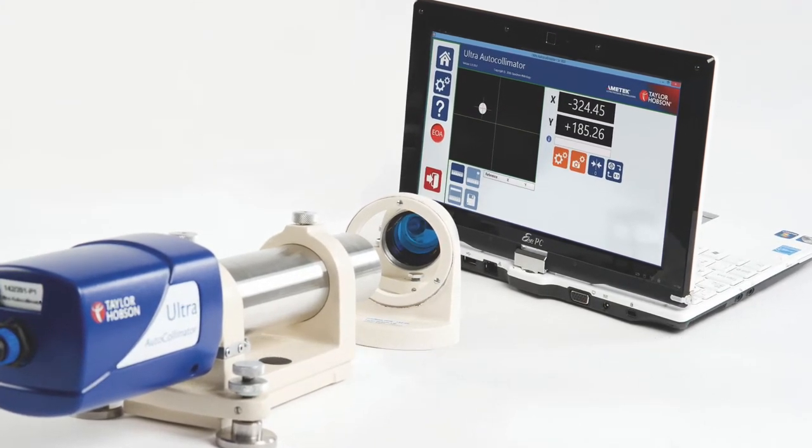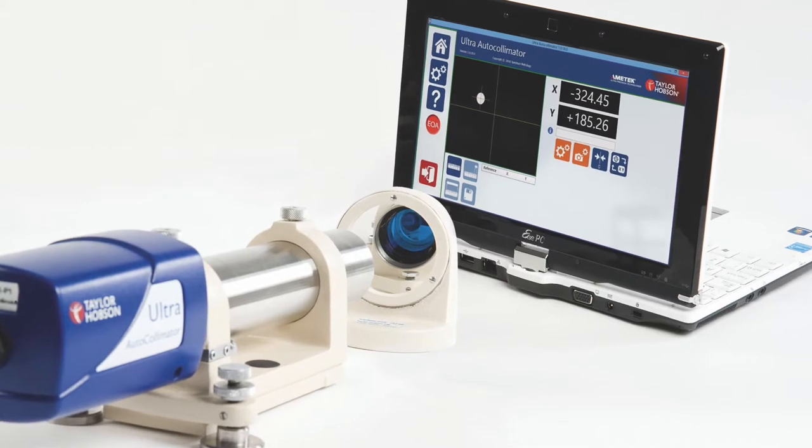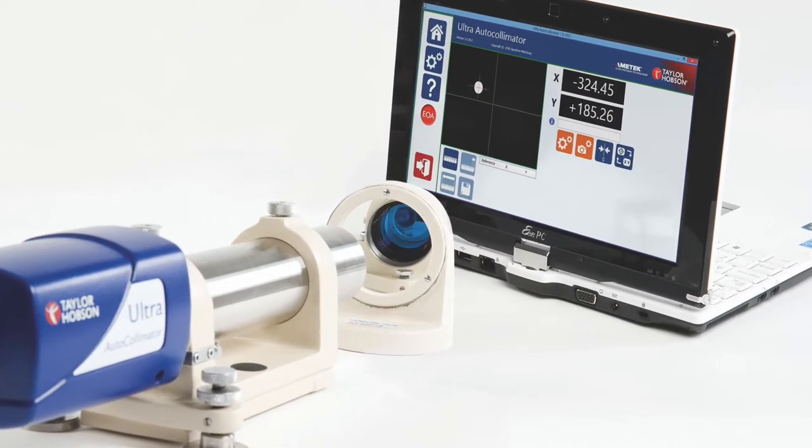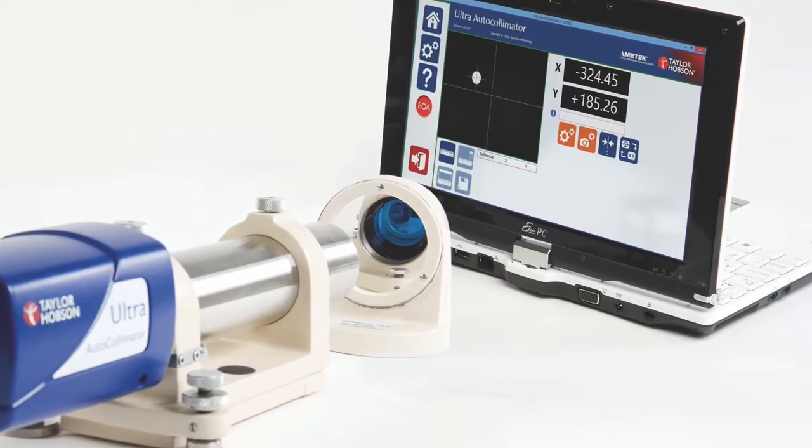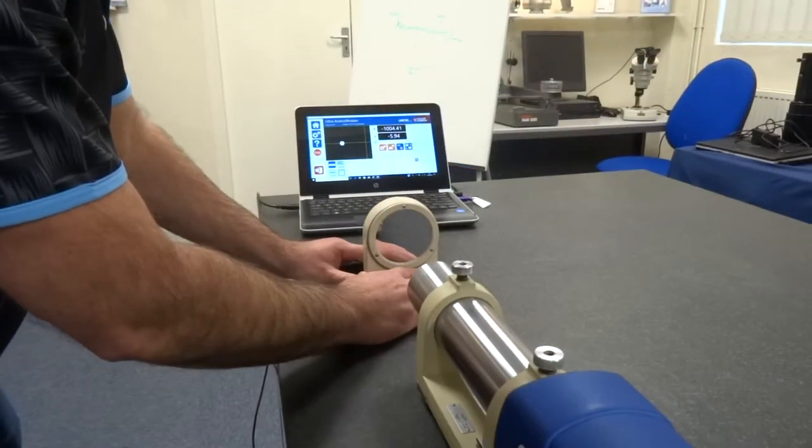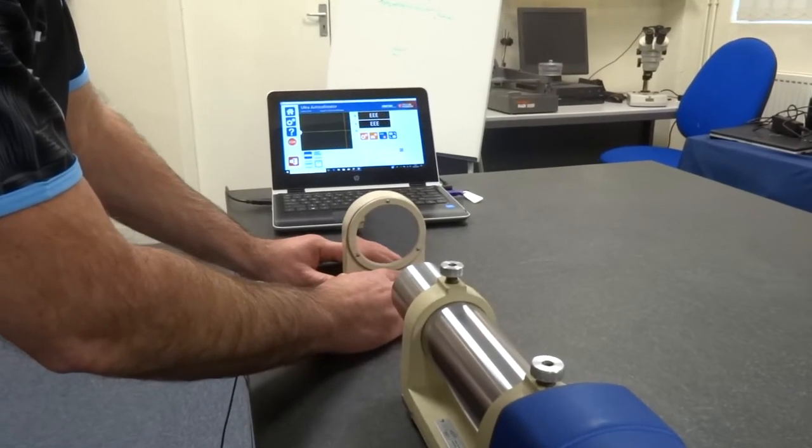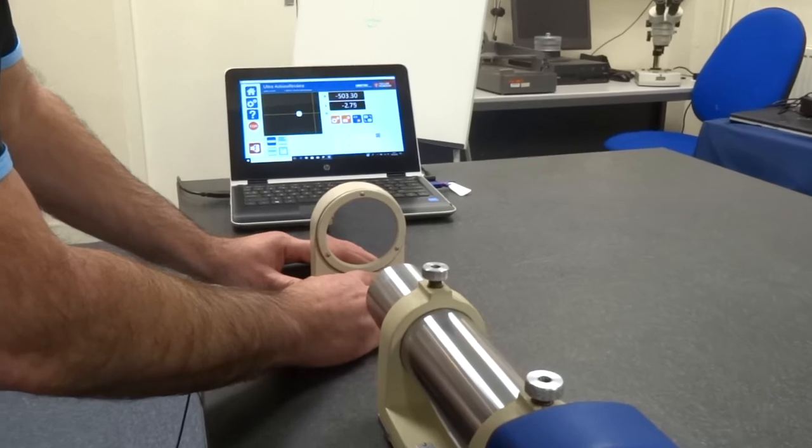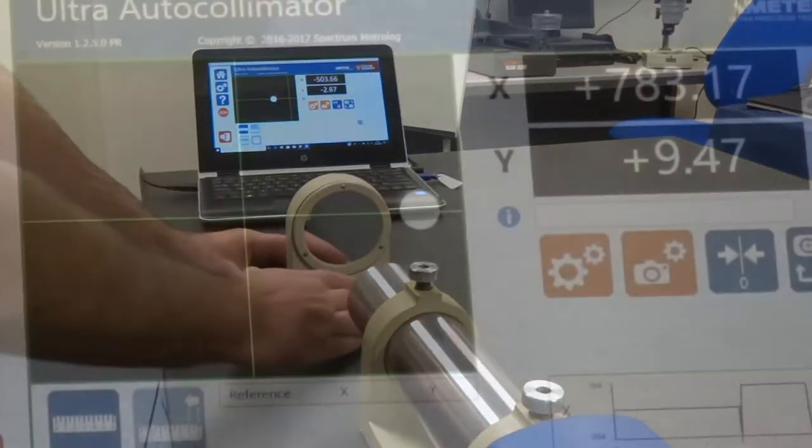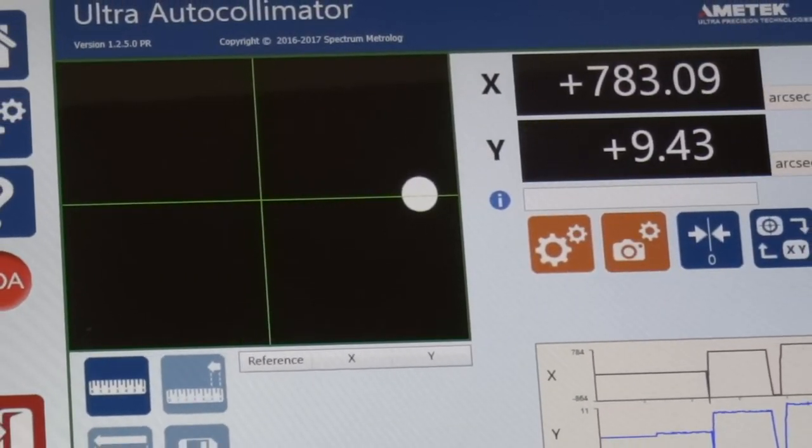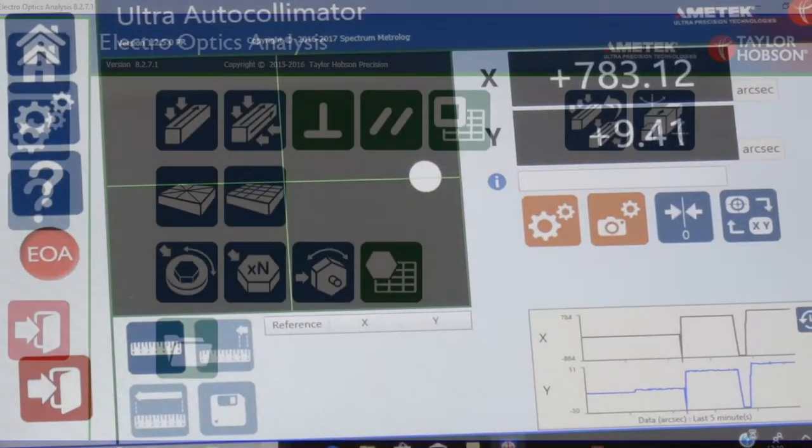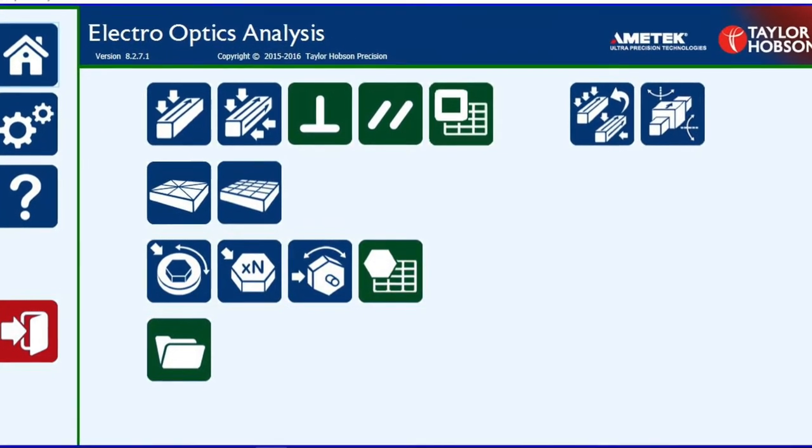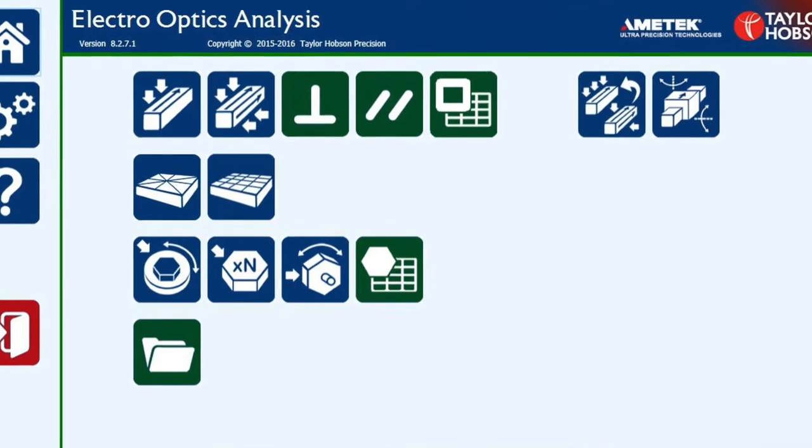For straightness measurement of a machined slideway, I would use the Taylor Hobson ultra autocollimator with its wide range and high accuracy. With the system as standard, you get a laser alignment aid and a tablet PC which acts as the autocollimator's digital display as well as having the Taylor Hobson application software packages preloaded.